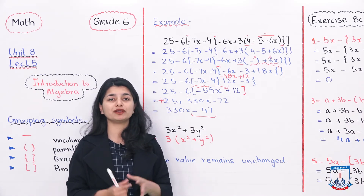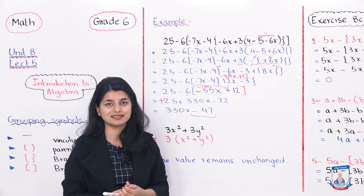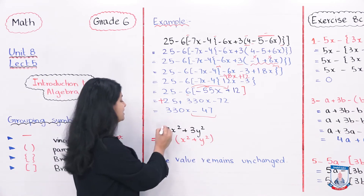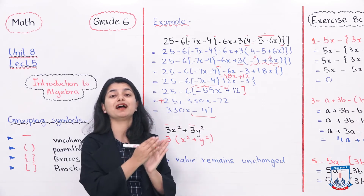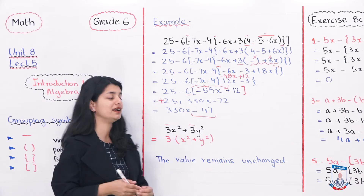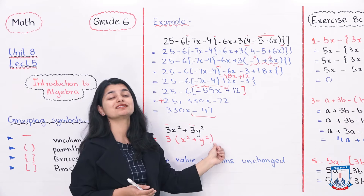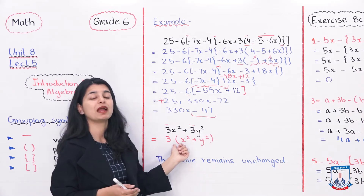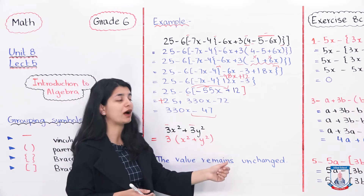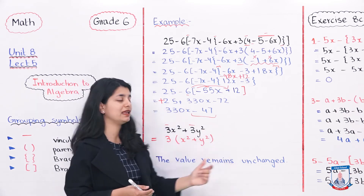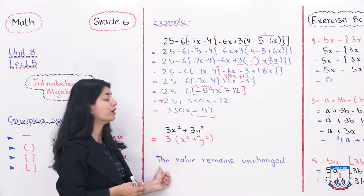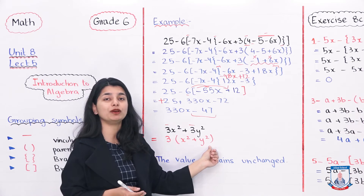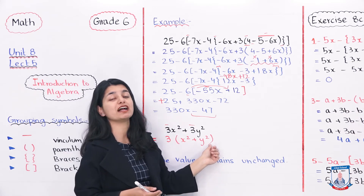In this way we have solved the example. Now in some questions like terms are given in a slightly more confusing way. For example, 3x squared plus 3y squared — both have 3 in common. You can write 3 separately on the side and put the rest inside brackets: 3(x squared plus y squared). This means the 3 outside multiplies both terms inside to give back the original expression. The value remains unchanged — it still means 3x squared plus 3y squared. This is simply a simplified way of writing it.